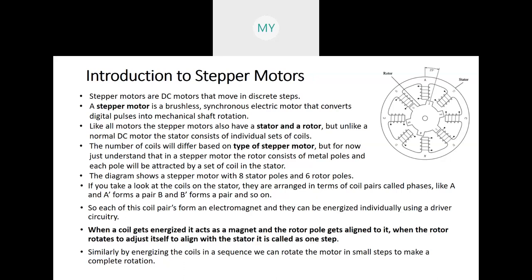With a stepper motor we can have precise motion and precise precision control. There are two types of motion: forward motion and reverse motion. The direction depends only on the polarity of the voltage — if we magnetize the coils in the reverse manner then the motor moves in reverse.